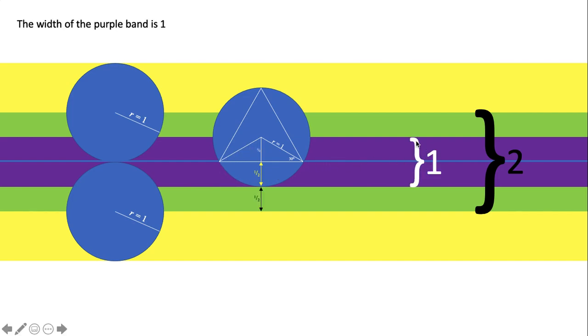So that middle purple band has a width of one unit. So the center of the circle must fall within the green band that we saw had a width of two units.